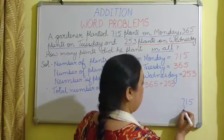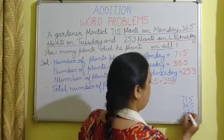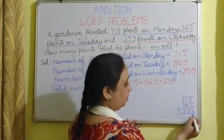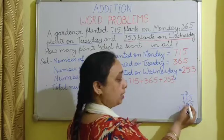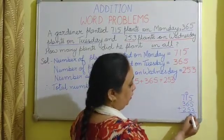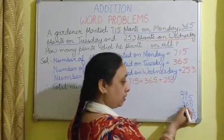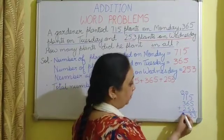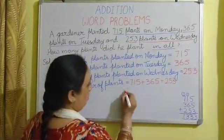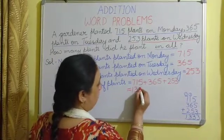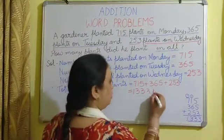715 plus 365 plus 253. 5 plus 5 is 10, 10 plus 3 is 13 — write 3, carry 1. 1 plus 1 is 2, 2 plus 6 is 8, 8 plus 5 is 13 — write 3, carry 1. 1 plus 7 is 8, 8 plus 3 is 11, 11 plus 2 is 13. So the total number of plants is 1333.